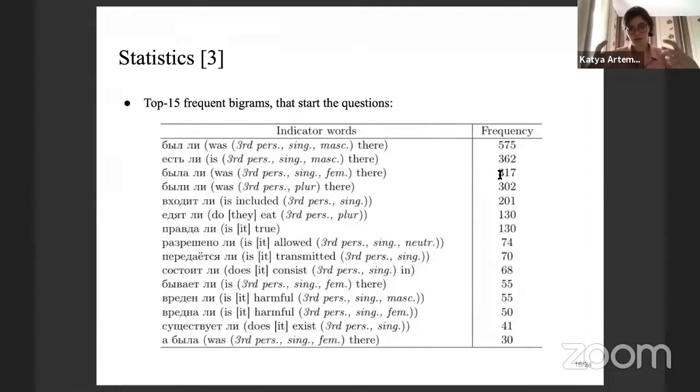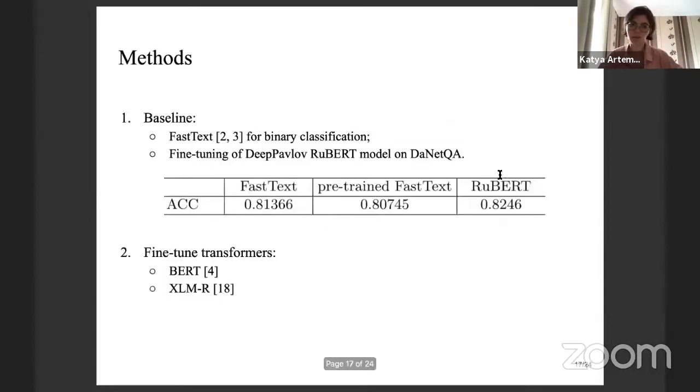Finally, this slide shows the first words of the questions. You can see that the majority of them follow kind of the same patterns. There is a verb and the word 'li,' which is used to ask the yes/no question in Russian. In fact, from this list, from these 15 prefixes of the questions, not all of them were provided by us. So not all of these templates were forced by us, and there is a lot of creativity from the crowdsources included in these questions.